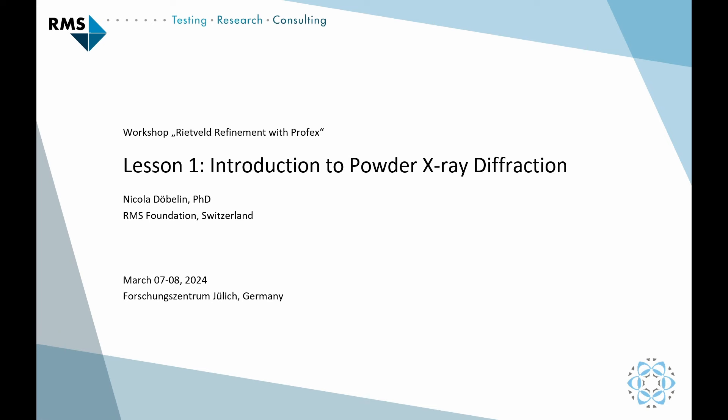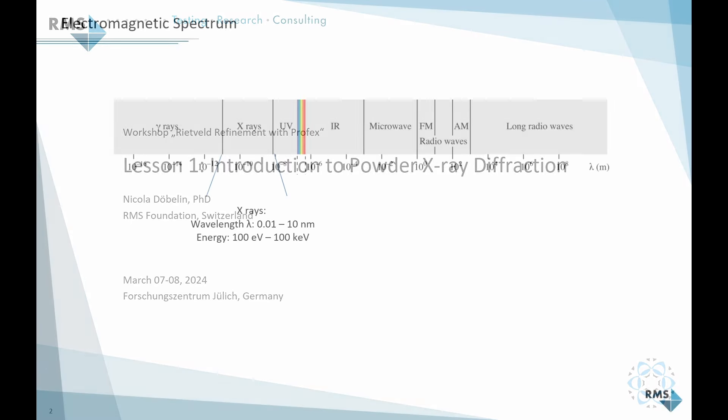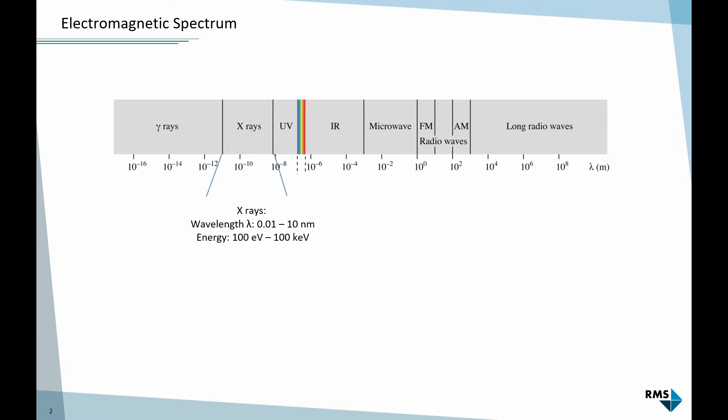Let's talk about some physical aspects of X-rays and diffraction, just to refresh the memory. X-rays are part of the electromagnetic spectrum. They have a shorter wavelength than visible and UV light. By definition, we call the range from 0.01 to 10 nanometers X-rays, or in terms of energy, that would be 100 eV to 100 kV. That's the range we define as X-rays.